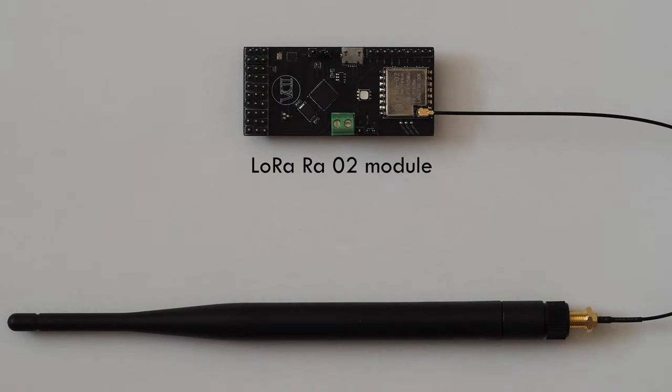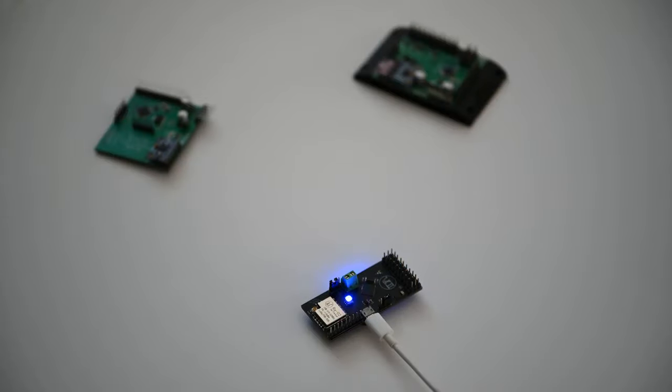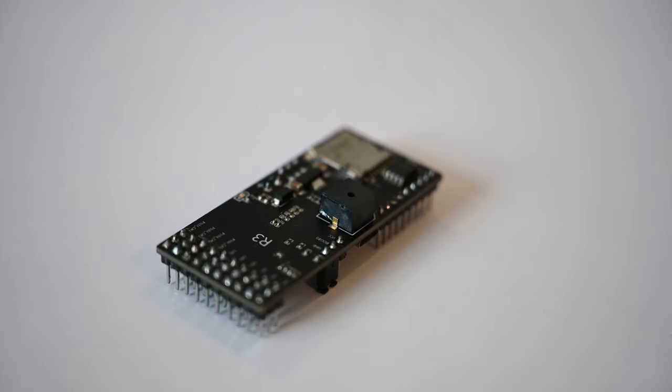We also have a LoRa radio transceiver that enables us to broadcast data and transfer certain commands over radio. For state indication we have an RGB LED on the front and a buzzer on the back, enabling us to see and hear that everything is going well in the computer.